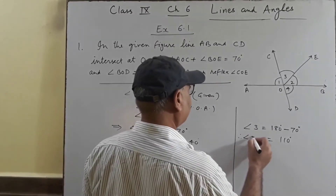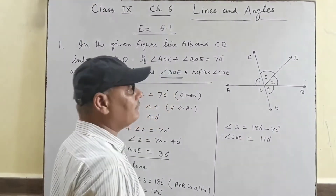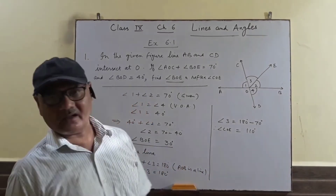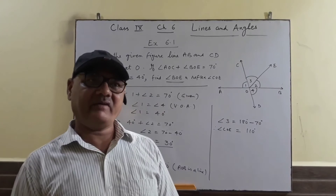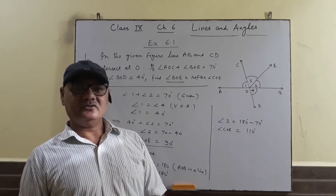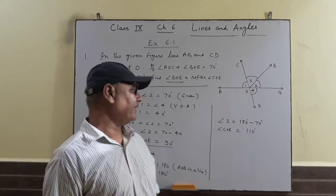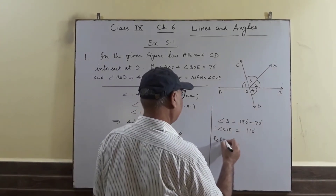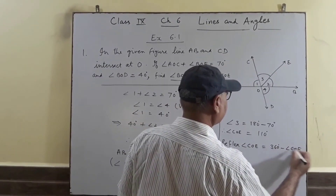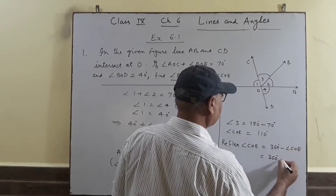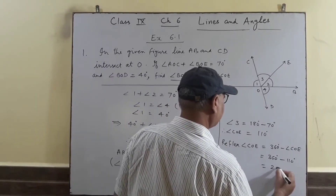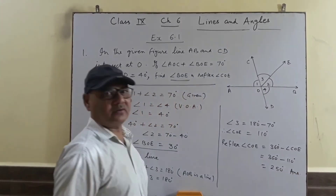Now, to find the reflex angle COE: a reflex angle is greater than 180 degrees. Reflex angle COE equals 360 degrees minus angle COE. Since angle COE is 110 degrees, reflex angle COE equals 360 minus 110, which is 250 degrees.